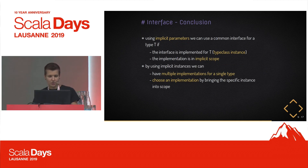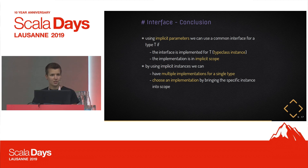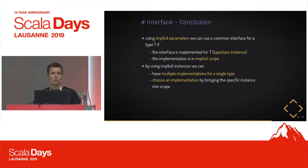To summarize the interface: when we have an implicit parameter we can write an interface that works for any type T that we have an implementation for. By using implicit instances we can have multiple different implementations per type, and choosing the implementation works by selecting the right implicit instance — either by importing it or defining it in the current scope.